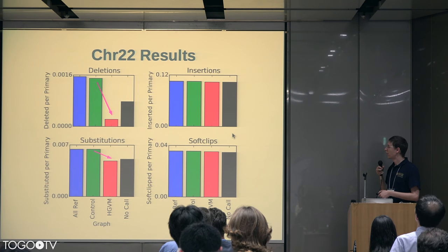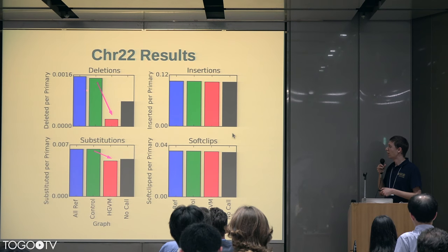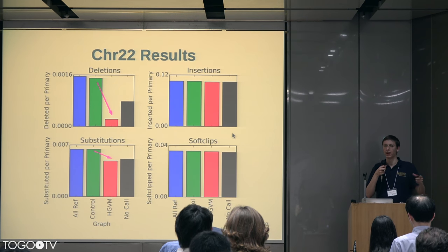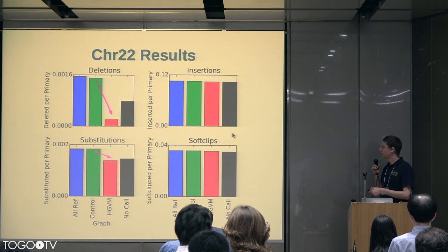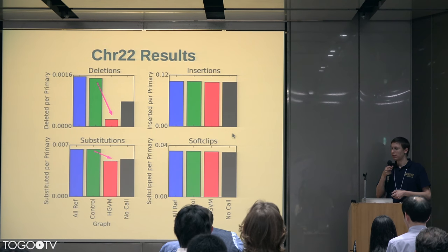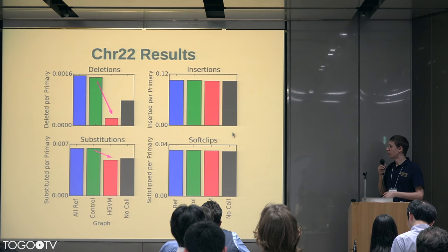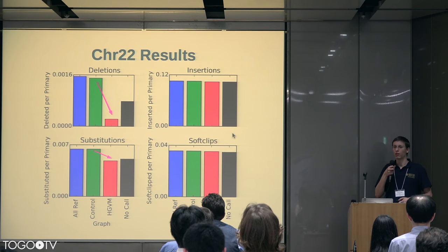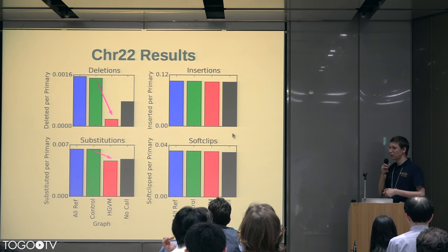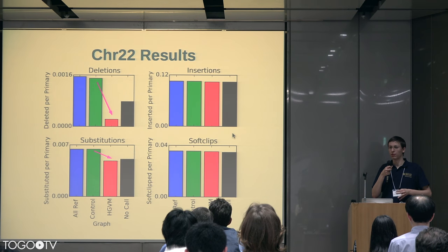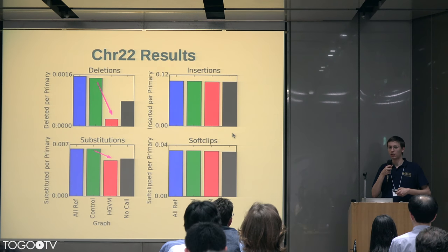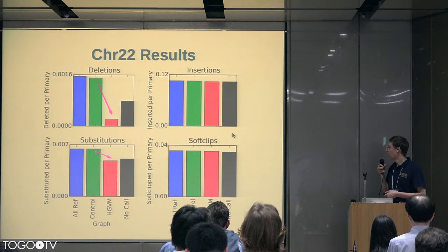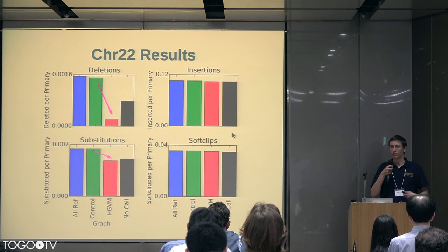You can see I'm plotting between the green, which is the control doing all this against a linear reference graph, and the red, which is the HGVM. I have a lot fewer deletions moving from the control to the HGVM, and also fewer substitutions — so I'm getting better performance out of the graph reference than out of the linear reference. But we don't really see much of an effect in insertions, and there's not really an improvement in the number of soft clips either.